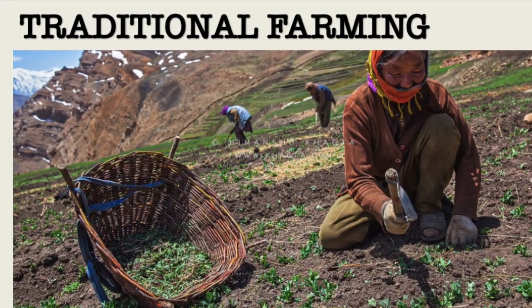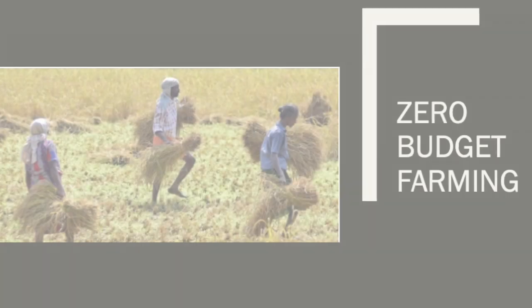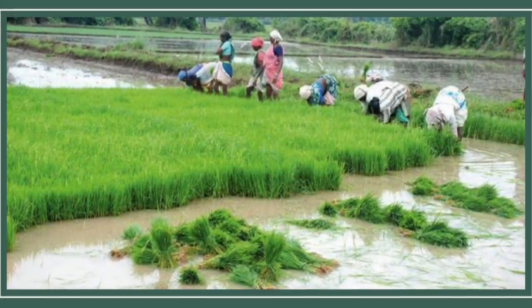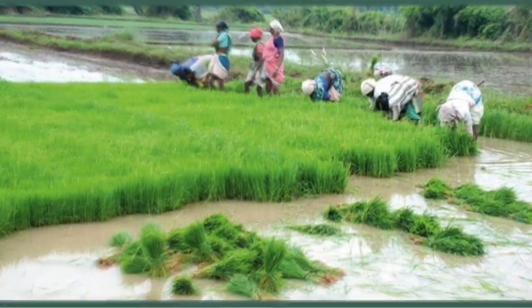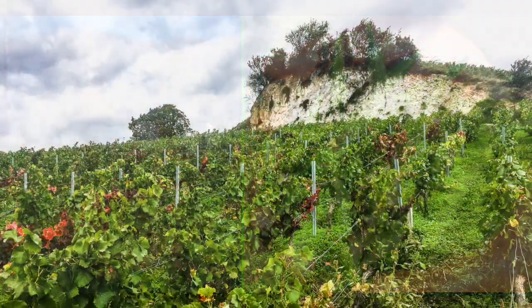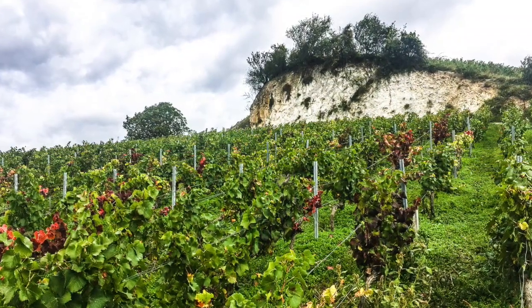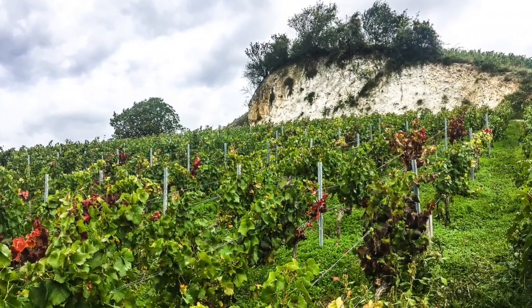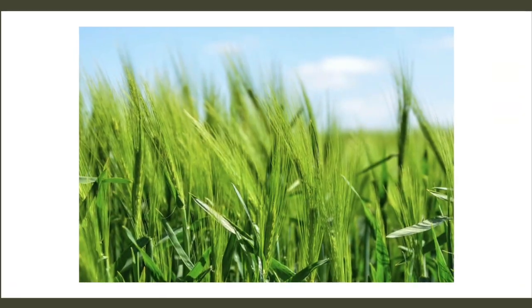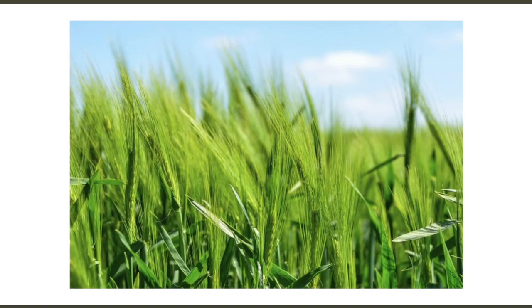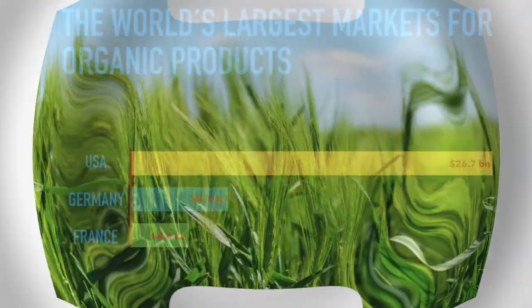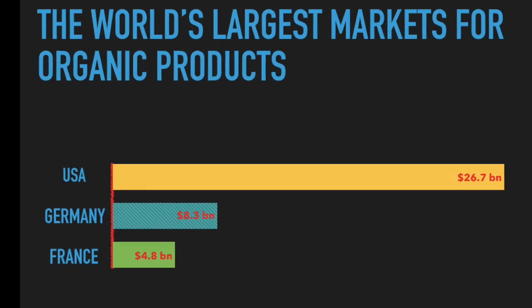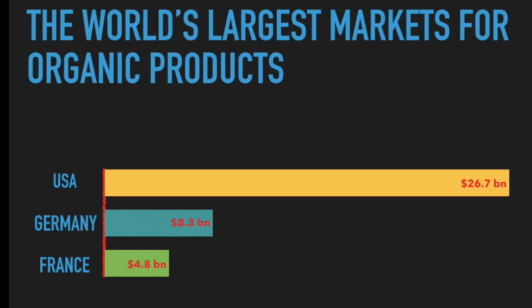India has the largest number of organic producers in the world, according to the World of Agriculture Report 2018. Switzerland tops in per capita consumption of organic produce, followed by Denmark and Sweden. The US, Germany, and France enjoy the largest share of the market in organic produce.